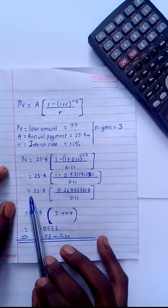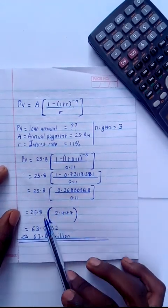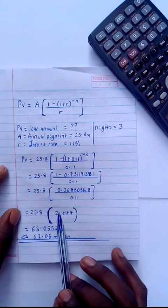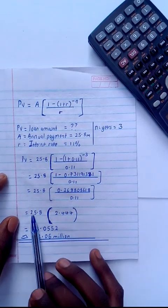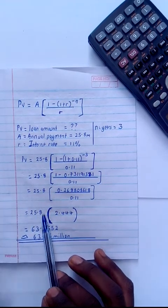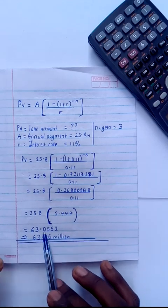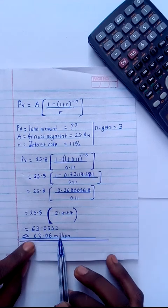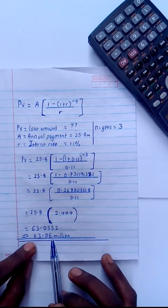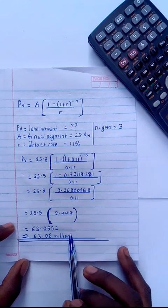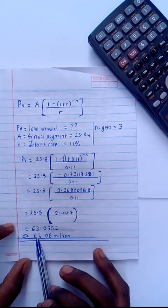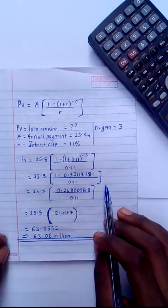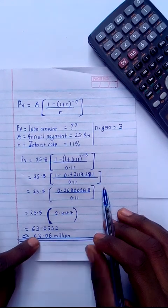The 25.8 multiplies with this, giving me 2.444. So 25.8 times this gives me 63.0552. Rounding off to two decimal places, I remain with 63.06. This is going to be our loan amount.